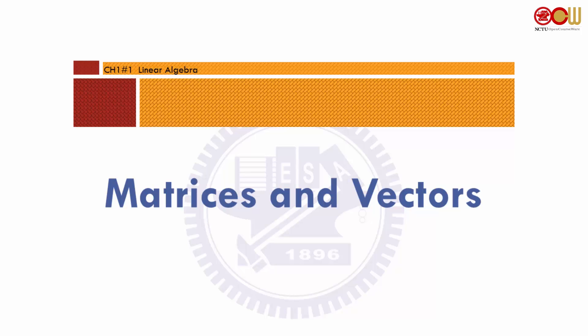Section 1.1: Matrices and Vectors. We will talk about some notation and give some definitions. Please pay special attention to the definitions, as we will be using these quite often in later sections and chapters. Please bear with me even if you are quite familiar with all these things. In the video, you will find some questions asked — please pause the video to think about these questions before you proceed.